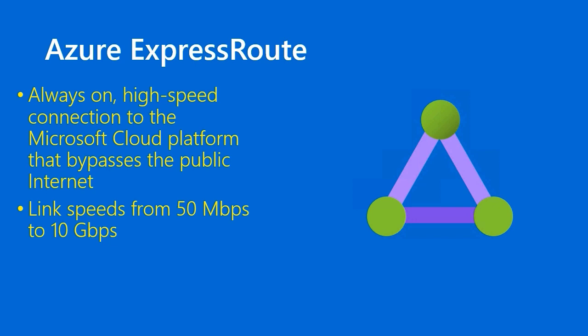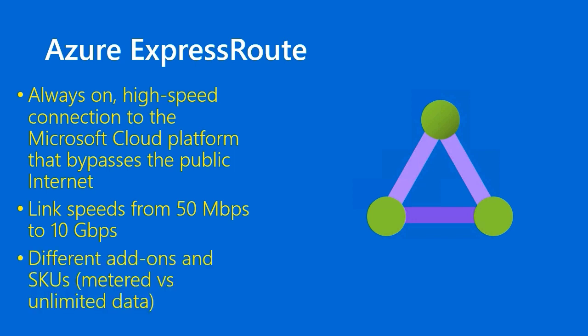The link speeds for ExpressRoute are very similar to Azure Site-to-Site VPN, though ExpressRoute starts a bit slower at the lower end. ExpressRoute ranges from 50 megabits per second to 10 gigabits per second. As you would expect with Azure products, there are different add-ons and stock-keeping units. For instance, you can do a metered plan where your bandwidth is metered, or you can pay extra for unlimited.